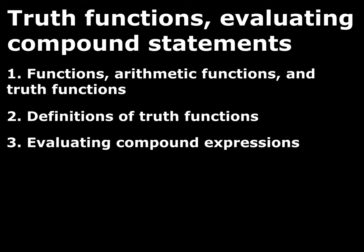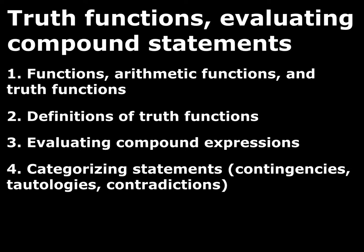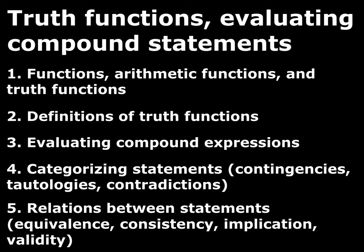What we will do in this video is do some evaluation of compound expressions — only ones that use conjunction and negation — and we'll be able to do truth tables to evaluate at least one compound expression using both of those. Then later we'll move to categorizing statements using a truth table to determine whether a given statement is a contingency, a tautology, or a contradiction. Finally, we'll use truth tables to assess relations between statements including equivalence, consistency, implication, and validity — which is the whole point of chapter 2.